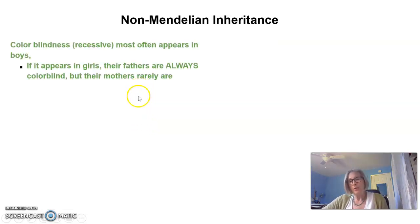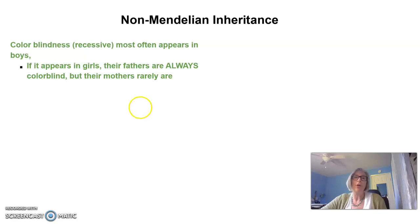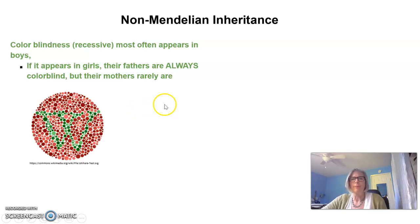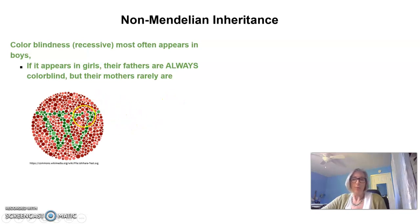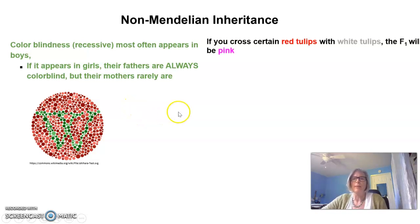I'm going to give you a few scenarios. Colorblindness, which is recessive, most often appears in boys. If it appears in girls, their fathers are always colorblind, but their mothers rarely are. This is an example of how you may test for colorblindness — if you can see the W in these dots, then you are not colorblind.